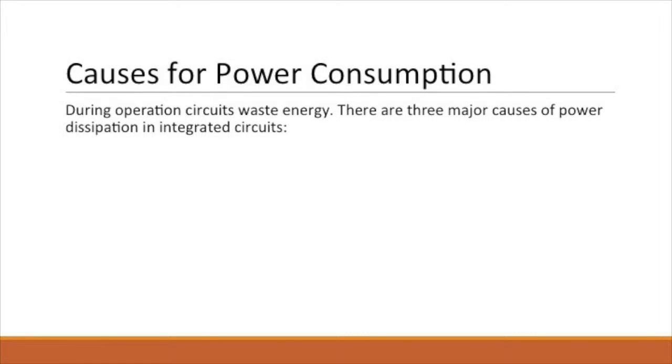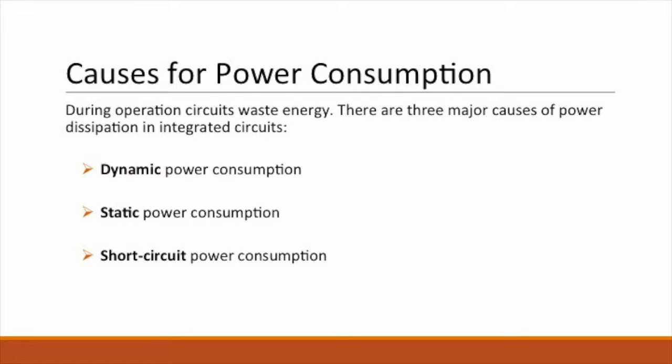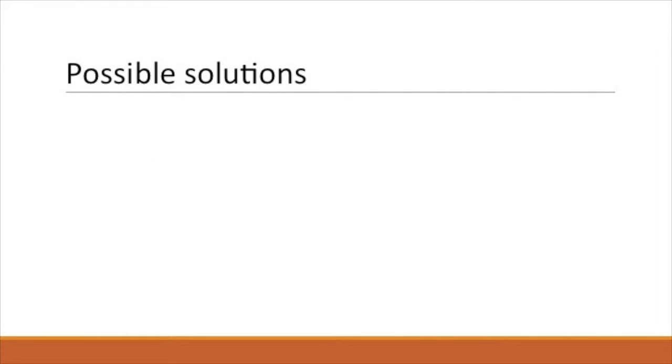There are three major causes of power dissipation in integrated circuits: dynamic power consumption, which is caused by the adiabatic charging and discharging of capacitance, usually parasitic; static power consumption, which corresponds to the non-zero current of transistors in off-state in digital circuits or the biasing current in their analog counterparts; and short-circuit power consumption, caused by crowbar current flowing during the lapse of time when both PMOS and NMOS transistors are in the on-state.